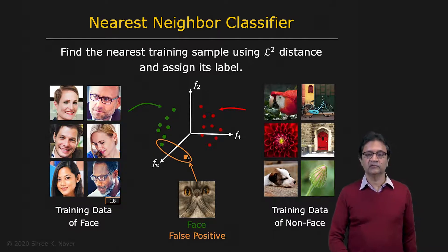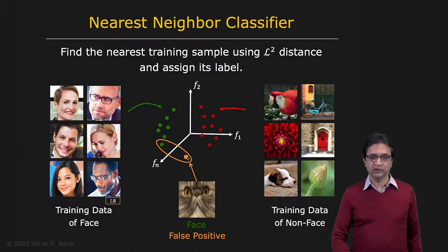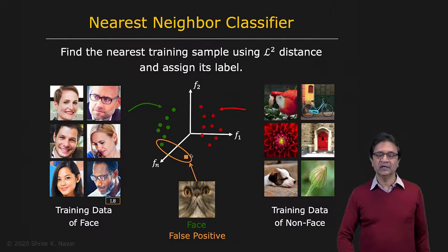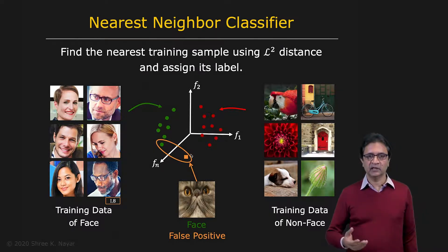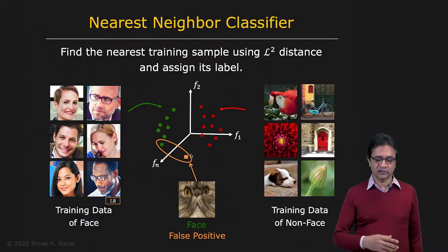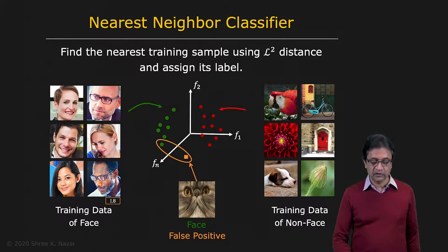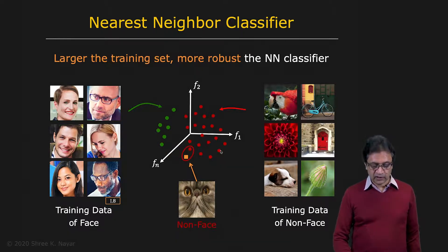So you're going to incorrectly classify this as a face — that's what we would call a false positive. In order to avoid this, all you can do is increase your training data, your examples of faces and non-faces. If you substantially increase, particularly the non-faces, then you see that this cluster of points begins to increase in size.